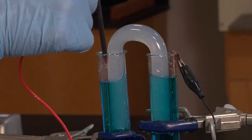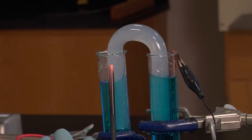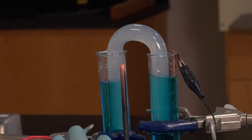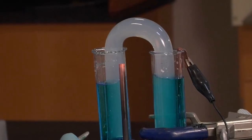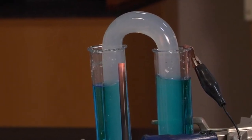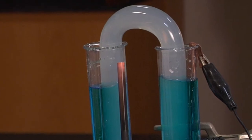And if we let this run long enough, you'll see that copper ions are gaining electrons and are actually producing solid copper. So see that copper on the graphite electrode?